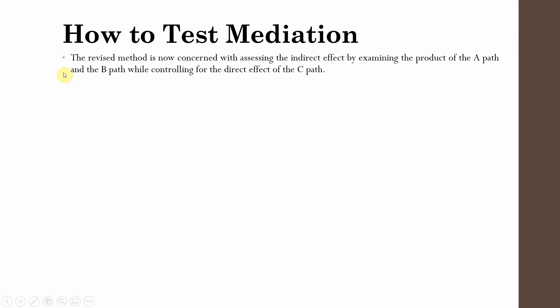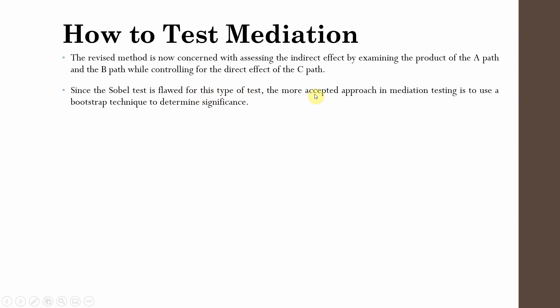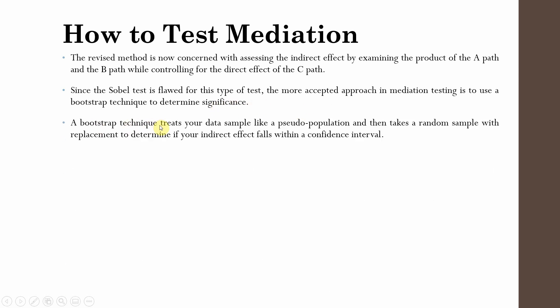The revised method is now concerned with assessing the indirect effect by examining the product of the A path and B path while controlling for the direct effect of the C path. Since the Sobel test is flawed, the more accepted approach is to use a bootstrap technique to determine significance. A bootstrap technique treats your data sample like a pseudo-population and takes random samples with replacement to determine if your indirect effect falls within the confidence interval. Typically 5,000 to 10,000 bootstrap samples are generated.